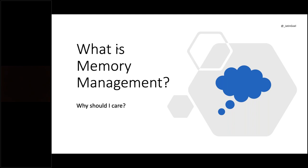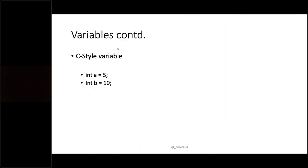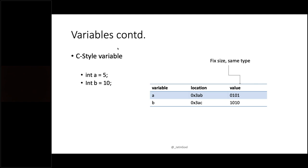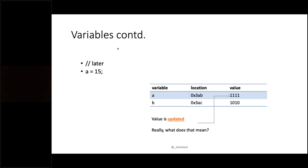Let's first cover C-style variables. In C and C++, we had static typed variables — you need to define the data type of the variable and then the value. In memory, the variable holds a location where the data is written, and for integers it's written in binary form. When you update a variable, like doing 'a equals 15', it goes to that memory location and updates the value there.